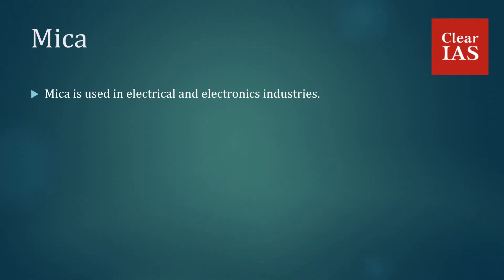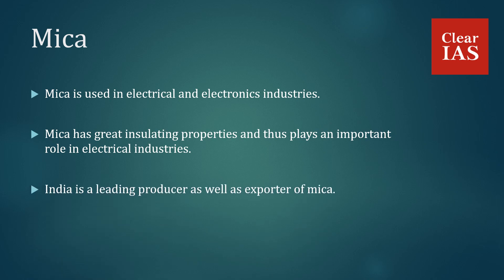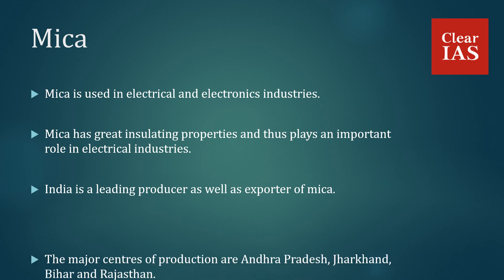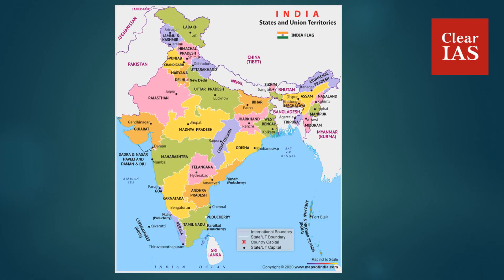Mica is used in electrical and electronics industries. Mica has great insulating properties and thus plays an important role in electrical industries. India is a leading producer as well as exporter of sheet mica. The major centers of production are Andhra Pradesh, Jharkhand, Bihar and Rajasthan. Mica is also widely used in beauty industries, and the rampant existence of child labor in Bihar and Jharkhand is a problem in India. The important mines are located in Nellore district of Andhra Pradesh, Koderma in Jharkhand, and Nawada in Bihar.